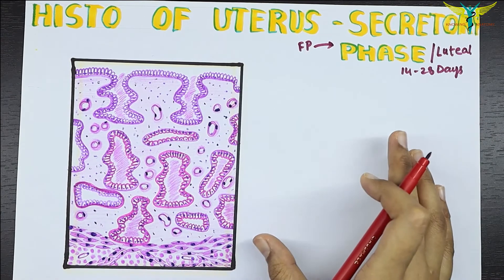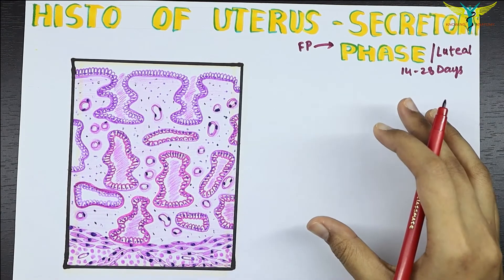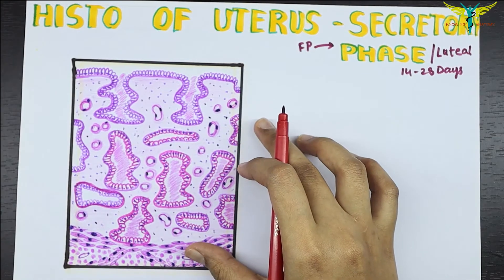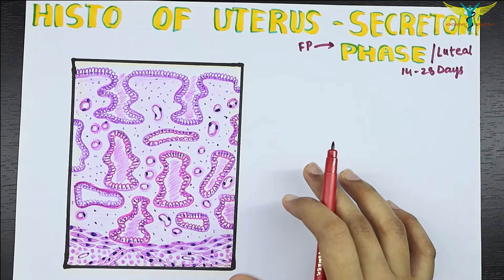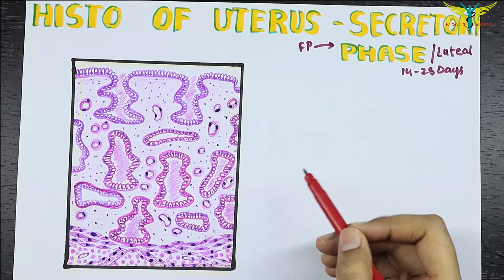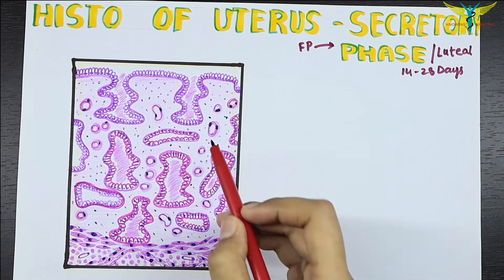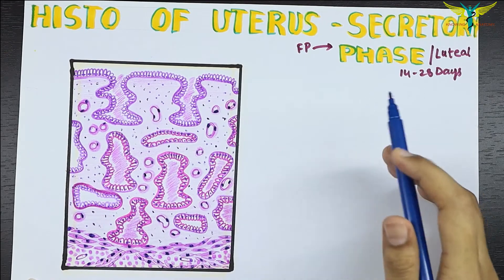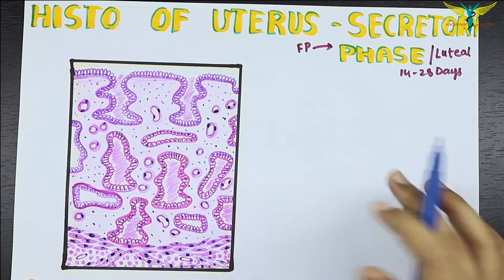Progesterone, stimulated by LH, is the dominant hormone during this secretory phase. This progesterone stimulates the corpus luteum and the endometrium for the implantation of the fertilized ovum. The uterus is a pear-shaped muscular organ that is located in the pelvic cavity.